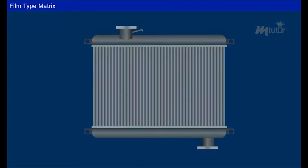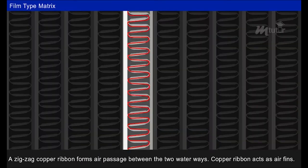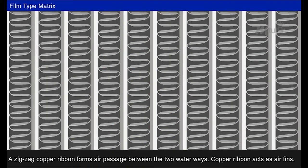Here we can observe film type of matrix. This is also called ribbon circular matrix. In this, we can find a pair of thin metal ribbons soldered together along their edges to form a waterway running from header tank to collector tank. A zigzag copper ribbon forms air passage between the two waterways.